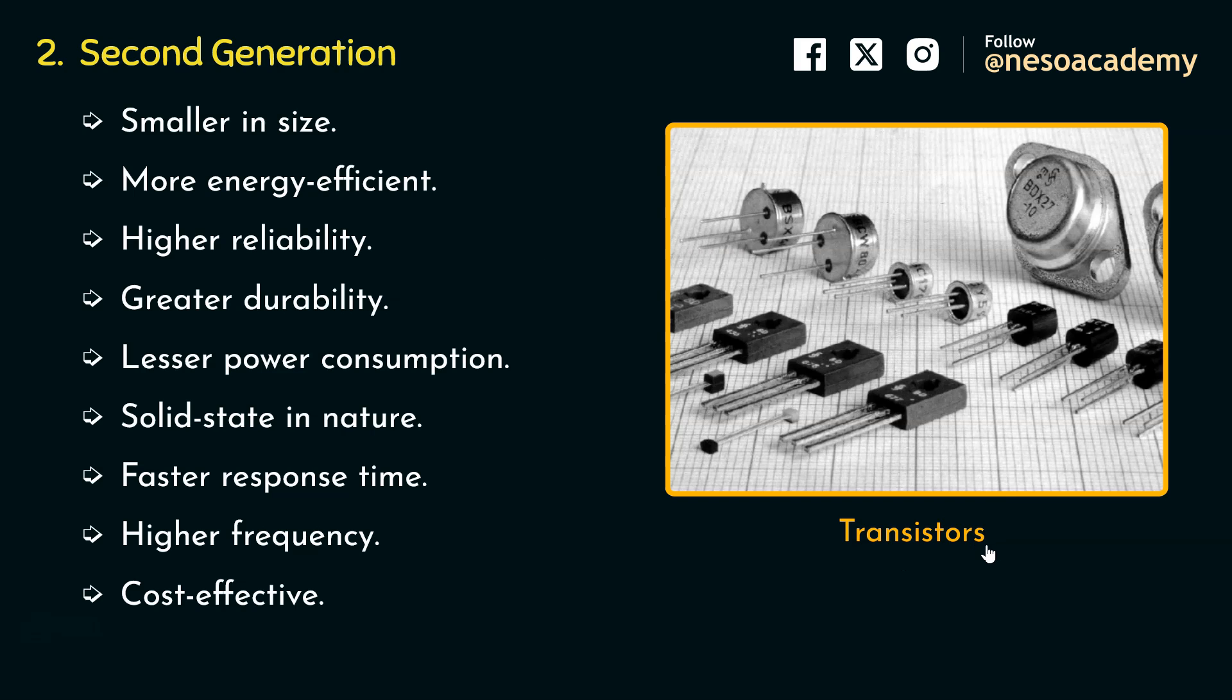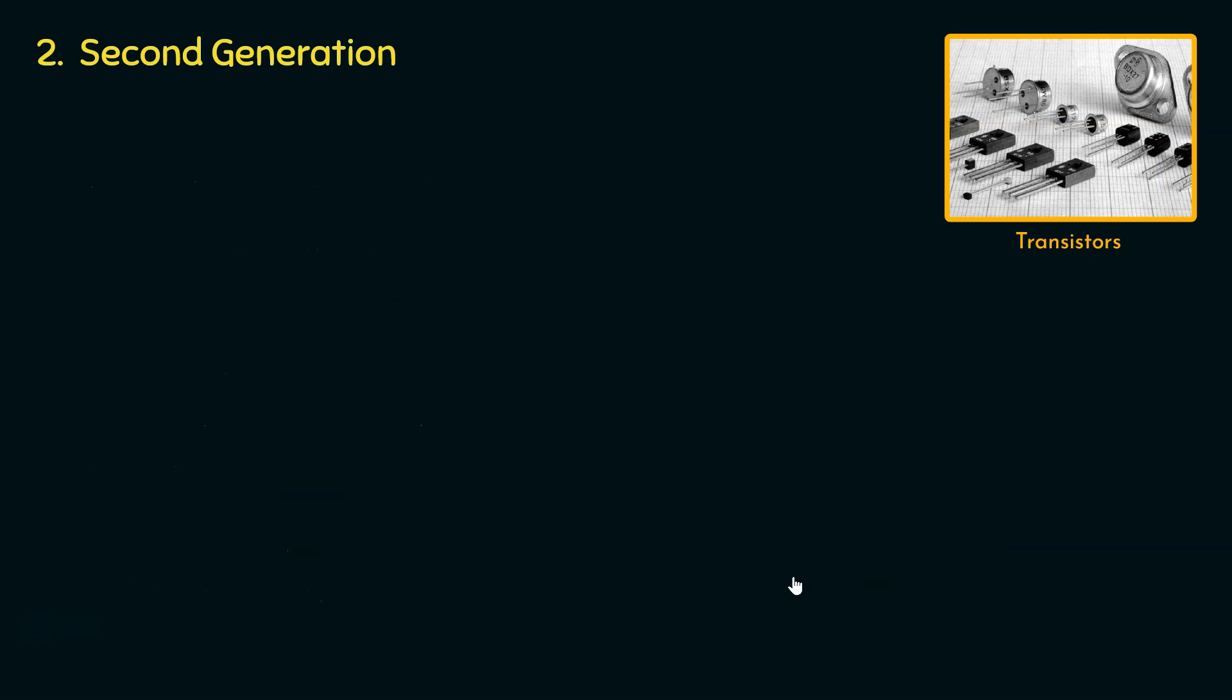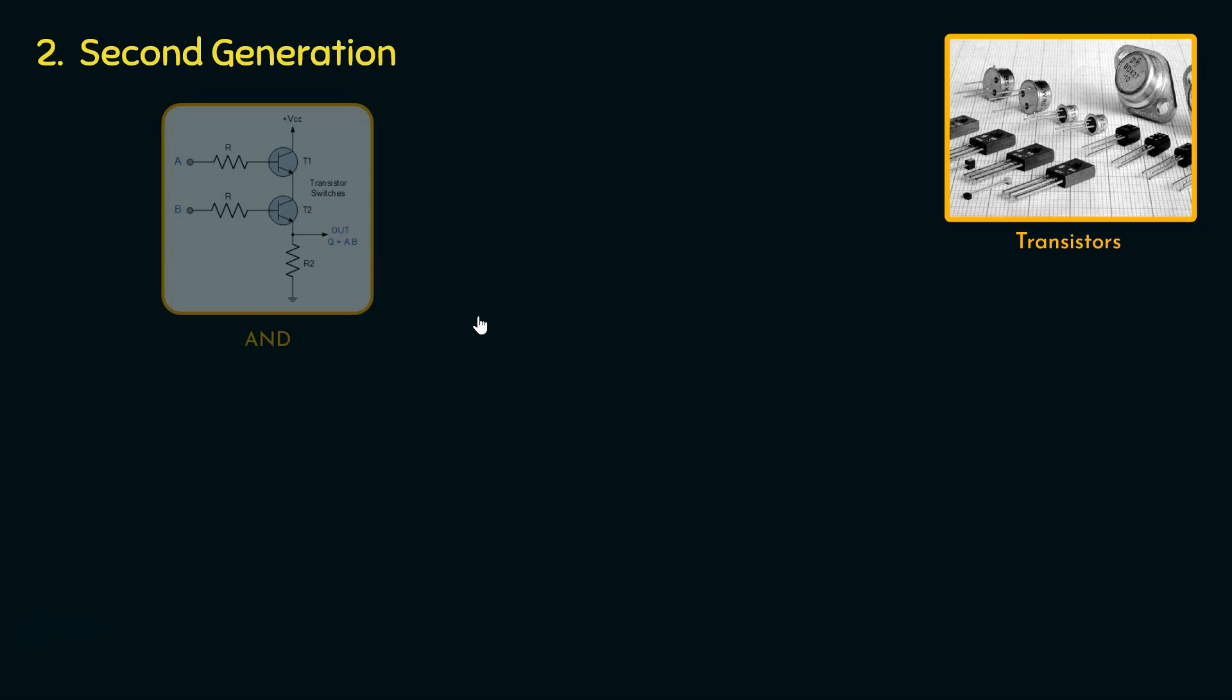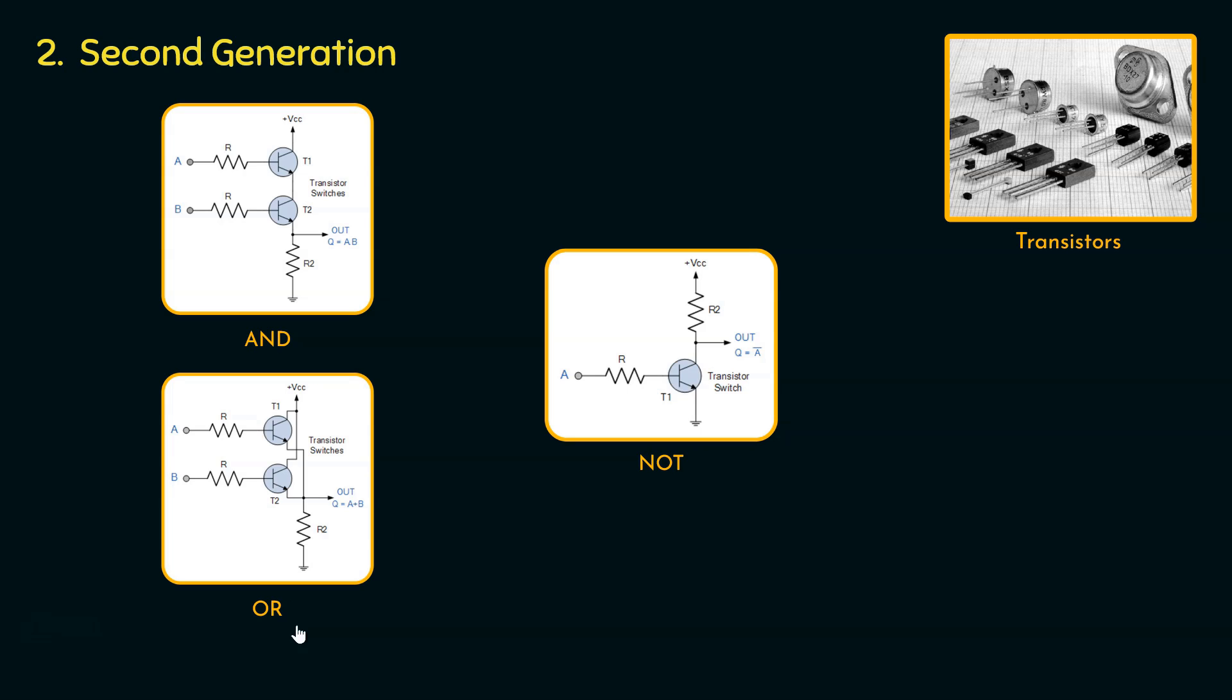Now let me show you how the basic gates can be implemented using transistors. Notice, these are the AND, OR, and NOT circuits using transistor switches. From the images themselves you can notice one thing: the circuits are quite simpler than that of the vacuum tube circuits. Also observe, in AND and OR we are using two transistor switches, whereas in case of NOT, only one transistor switch is being used. Also, the circuits are really simple.